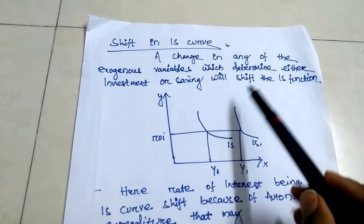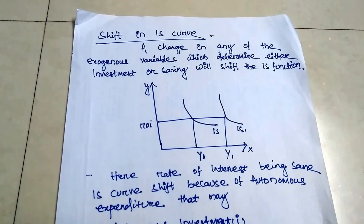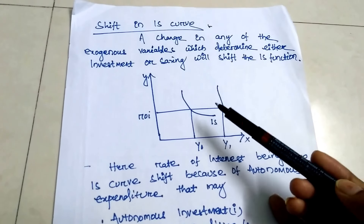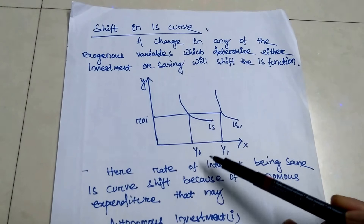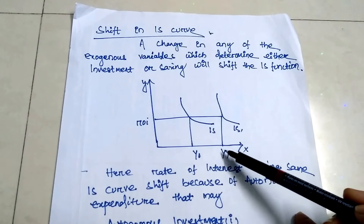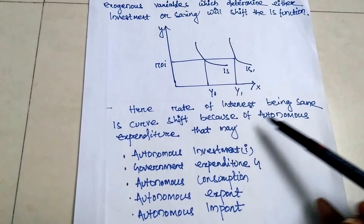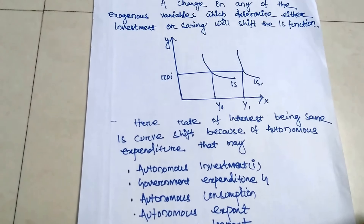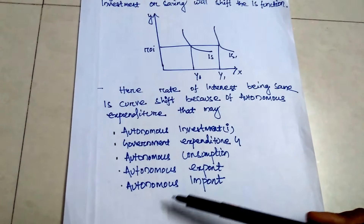Next, a shift in the IS curve occurs when there is a change in any exogenous variable that determines either investment or saving. The IS curve shifts from IS to IS1 because, with the rate of interest being the same, income and output increase. The shift of the IS curve can be caused by autonomous investment, change in government expenditure, change in autonomous consumption, autonomous export, or autonomous import.